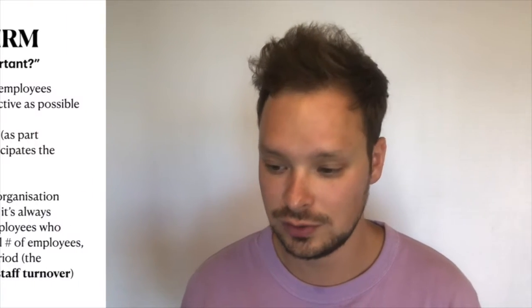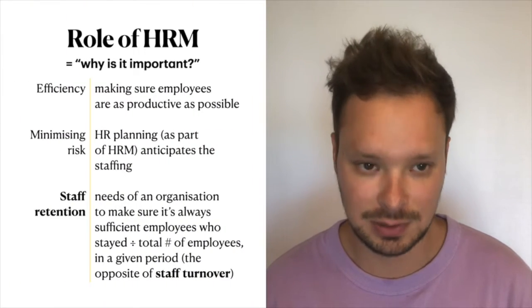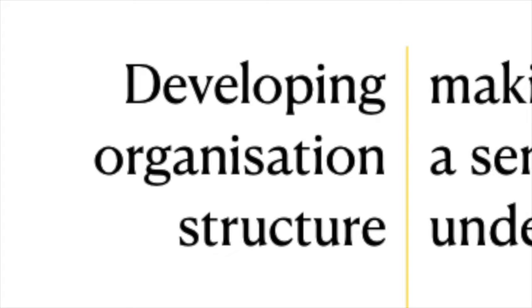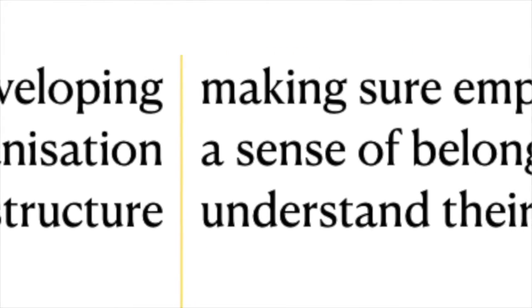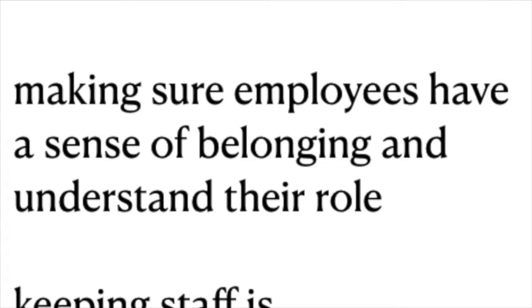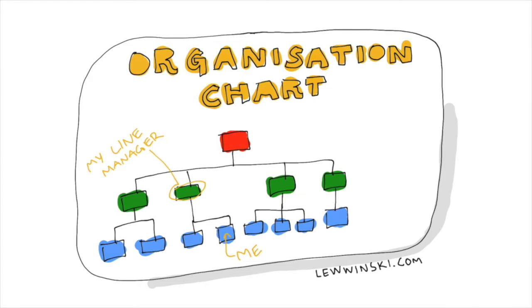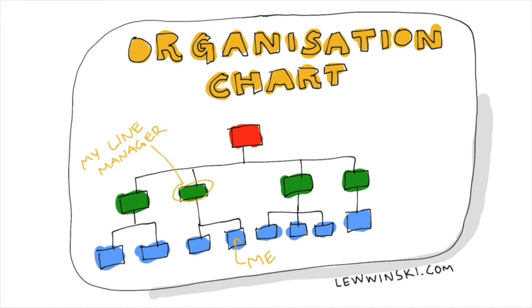The third reason is staff retention — how many employees stay in the workplace in a given time. The opposite of staff retention is staff turnover. One of the roles of HR management is to make sure there are appropriate levels of staff retention and staff turnover. The fourth reason is developing organization structure. The HR department is in charge of creating organization charts that help employees understand where they belong in the company, who their line manager is, and who they are responsible for. It creates a sense of belonging.